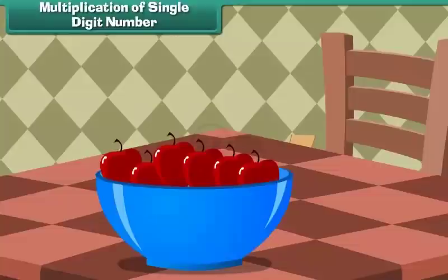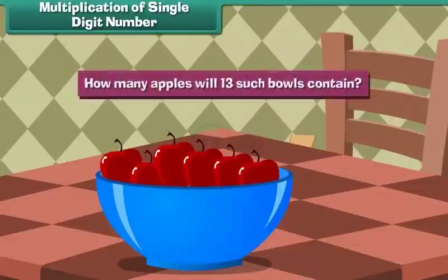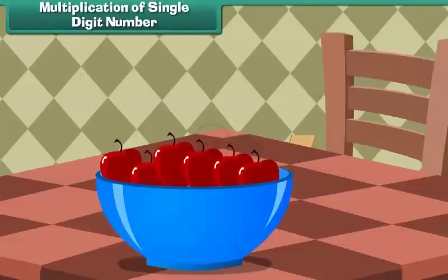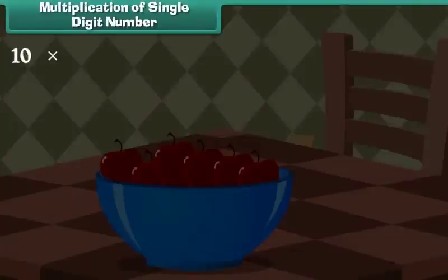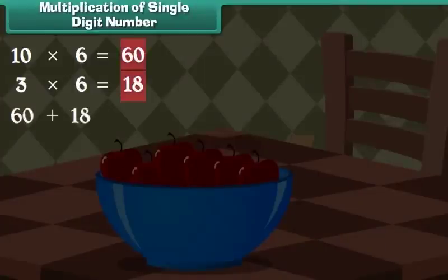A fruit bowl contains 6 apples. How many apples will 13 such bowls contain? We must multiply 13 and 6 to find the answer. Write 13 as 10 plus 3. Multiply 10 by 6, then multiply 3 by 6, and sum the results. 10 multiplied by 6 is equal to 60, 3 multiplied by 6 is equal to 18, and 60 plus 18 is equal to 78. So 13 bowls will contain 78 fruits.